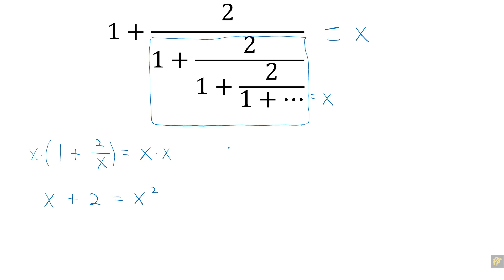When you rearrange this equation, this can be a quadratic equation which is x squared minus x minus 2 equal to 0.